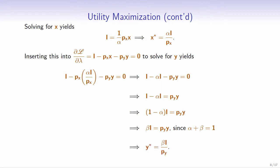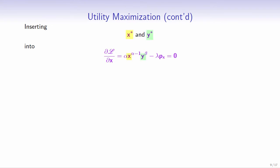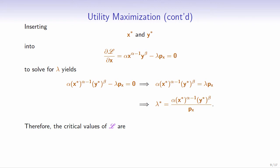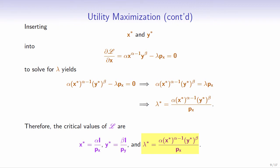Now that we have x and y, we can plug them into the partial derivative of L with respect to x to solve for lambda. Moving lambda times the price of good x to the right-hand side, we get alpha times x^(alpha−1) times y^beta equals lambda times the price of good x. Solving for lambda: lambda equals alpha times x^(alpha−1) times y^beta all over the price of good x. So the critical values are x equals alpha times income over px, y equals beta times income over py, and lambda as above.